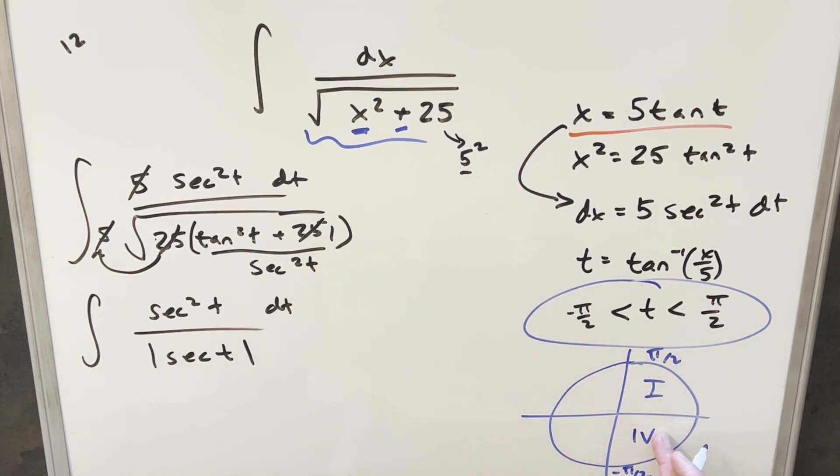But for our t in this region here, well, secant is just 1 over cosine. All those values of cosine are always positive. So secant of t in quadrants 1 and 4 is always positive. So that's going to allow me to just drop my absolute value right here. But then I can just cancel one of these with one of these. And now we're just integrating secant t.